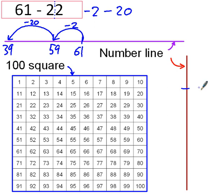Over here, on a vertical number line, write down the starting number, 61, take away 2, take away 20. 61 take away 2 is 59, 51 take away 20 is 39.